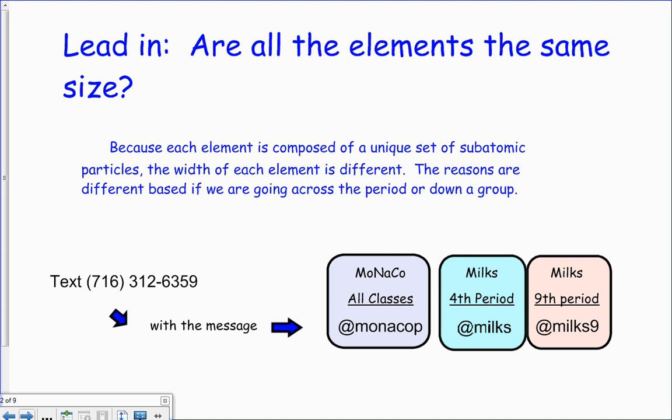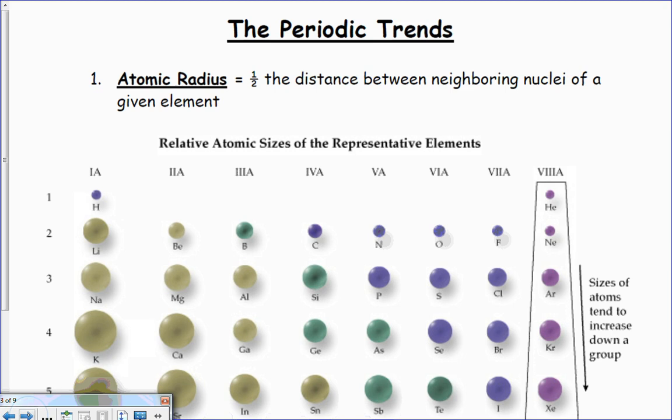Okay, and when we talk about radius, here's a good picture. Radius is measured as half the distance between the neighboring molecule. If I had two of them, well that's basically because they are so small I can't just measure them.